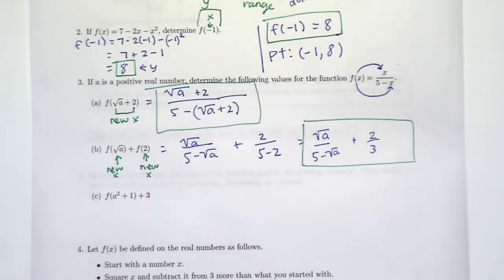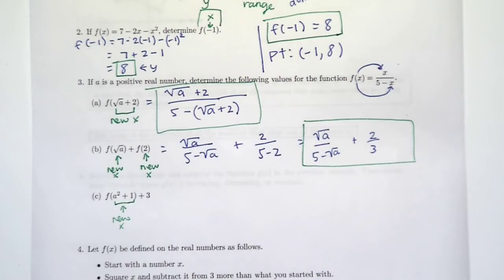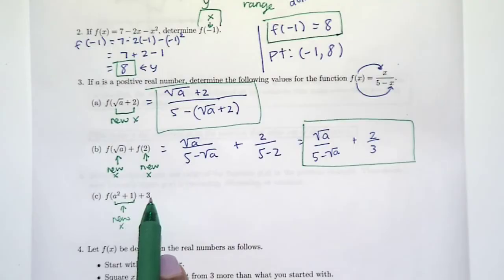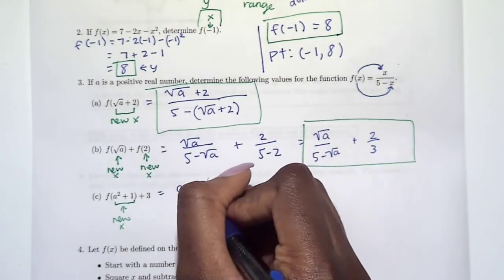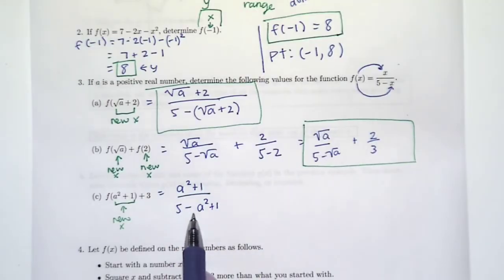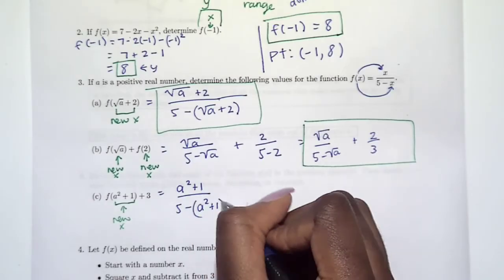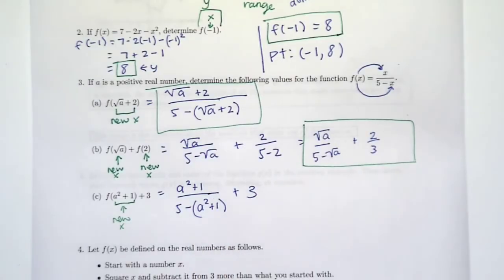Finally, we have f of a squared plus 1, and then plus 3. Our new x is a squared plus 1. Is the 3 also our new x? No, because it is not inside our function — this 3 is something we're just going to add on later. I don't just want to subtract a squared; I want to subtract this whole x, which is a squared plus 1, and then add plus 3 at the very end.